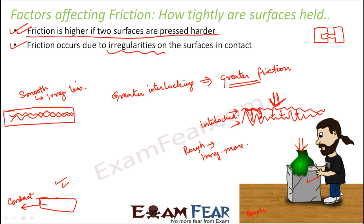So this is how the factor of how tightly or how loosely the surfaces are pressed to each other also determines how much friction the surface will exert. I hope these two factors which affect friction are now clear. Friction is all because of interlocking between the surfaces. When interlocking increases, friction increases. When interlocking decreases, friction decreases.